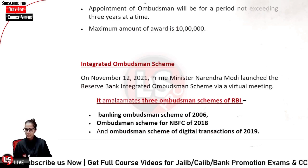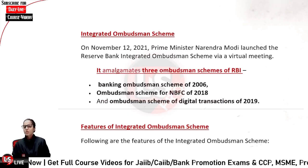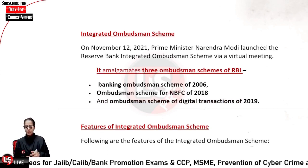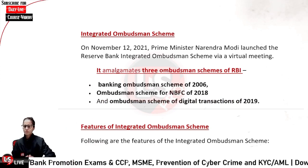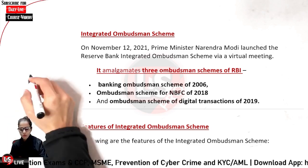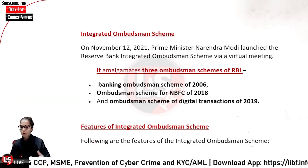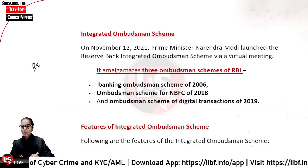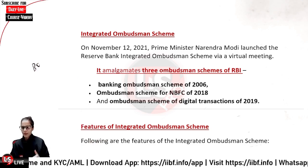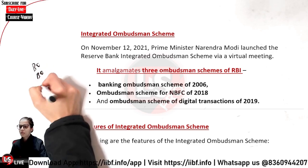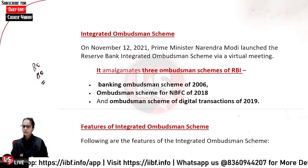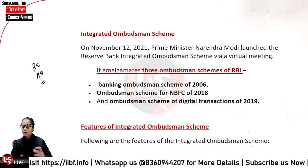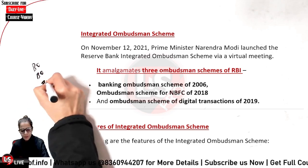Now we come to the Integrated Ombudsman Scheme, which is our main topic. Why was the Integrated Ombudsman Scheme needed? If you are a bank customer and have an issue, you go to the Banking Ombudsman. For NBFCs, you have to go to the NBFC Ombudsman. If you have any problem with a digital transaction, you have to go to yet another ombudsman and file an application to register your complaint.